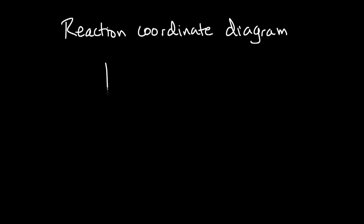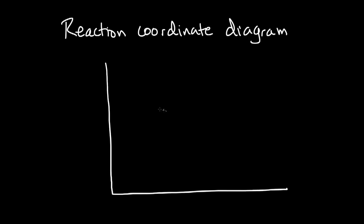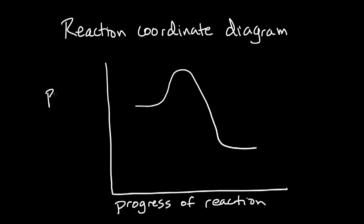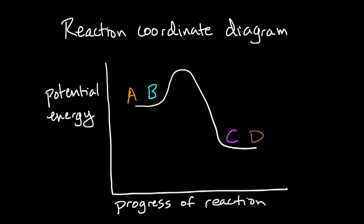Intuitively, you would expect that the more concentrated the reactants, the faster the reaction, and this is generally true. Let's draw a reaction coordinate diagram to better understand our hypothetical reaction. The x-axis is the progress of the reaction, and the y-axis is potential energy. Here are the reactants, and here are the products. We'll assume that the reaction is exothermic — in other words, that energy is given off as the reaction progresses.